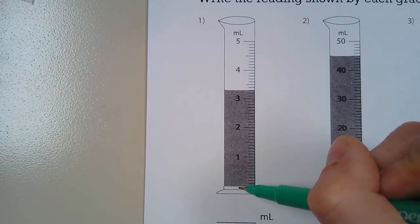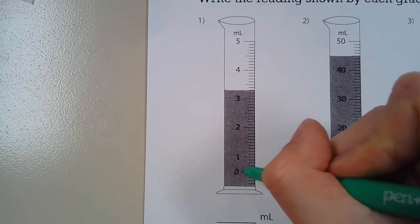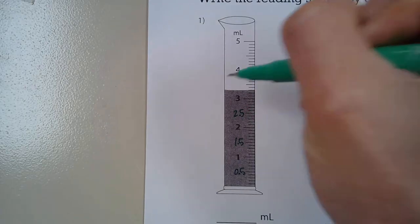Between zero and one, halfway between zero and one would be 0.5. And so this would be 1.5, this would be 2.5, this would be 3.5, this would be 4.5.